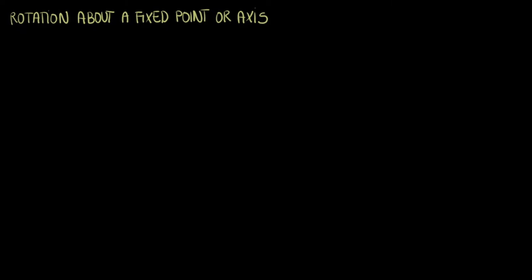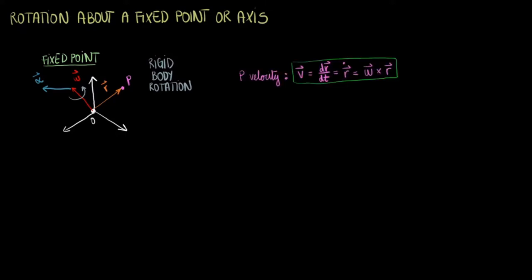In this sketch, we have a point P, which could be a point in a rigid body. P is rotating about O at the origin. P will have a velocity equal to dr dt or r dot. As you may recall, we can rewrite that as omega cross r.